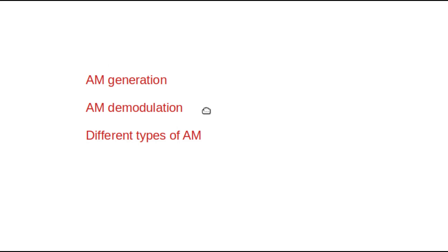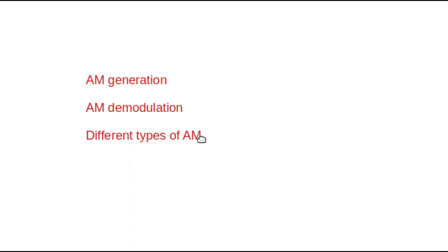In this video we discussed the generation of an AM signal with the help of a CE amplifier, and the AM demodulation process whose circuit contains a rectifier part and a low-pass filter part. We also saw the different types of AM depending upon the bandwidth requirement and the power to be transmitted. That's all in this video — thank you.